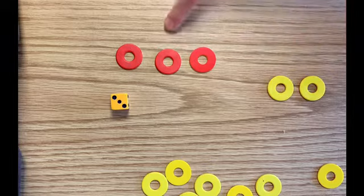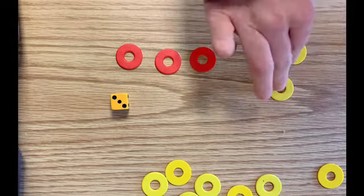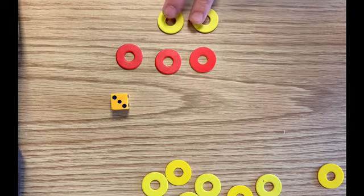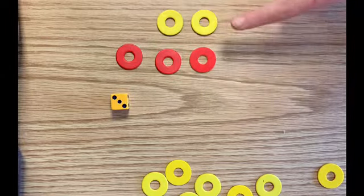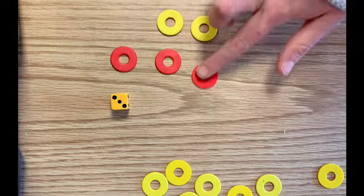Which one is more? Two or three? Yep, three is more. So you can look at that by lining up the different colors, one on the top, one on the bottom, and seeing which one has an extra. So this one has a buddy, this one has a buddy, but this one is extra.